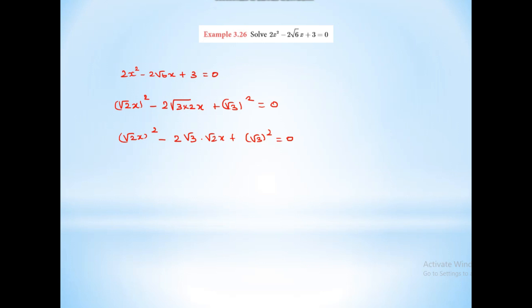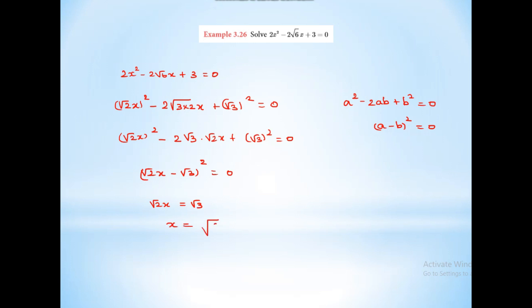This is in the a² minus 2ab plus b² format, which equals (a minus b)² equal to 0. So (√2·x minus √3)² equal to 0, which gives √2·x equal to √3. Therefore x is equal to √3 divided by √2.